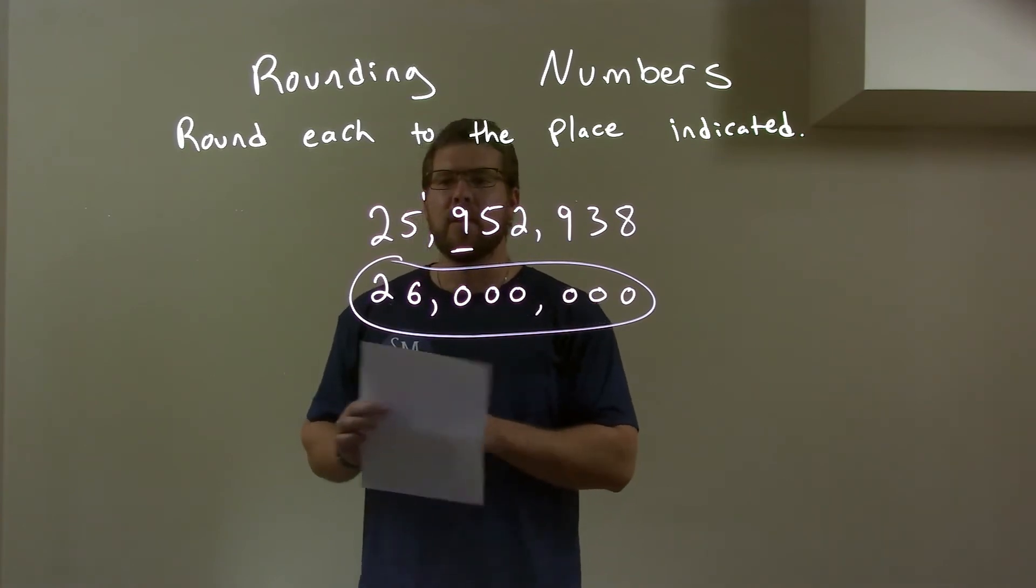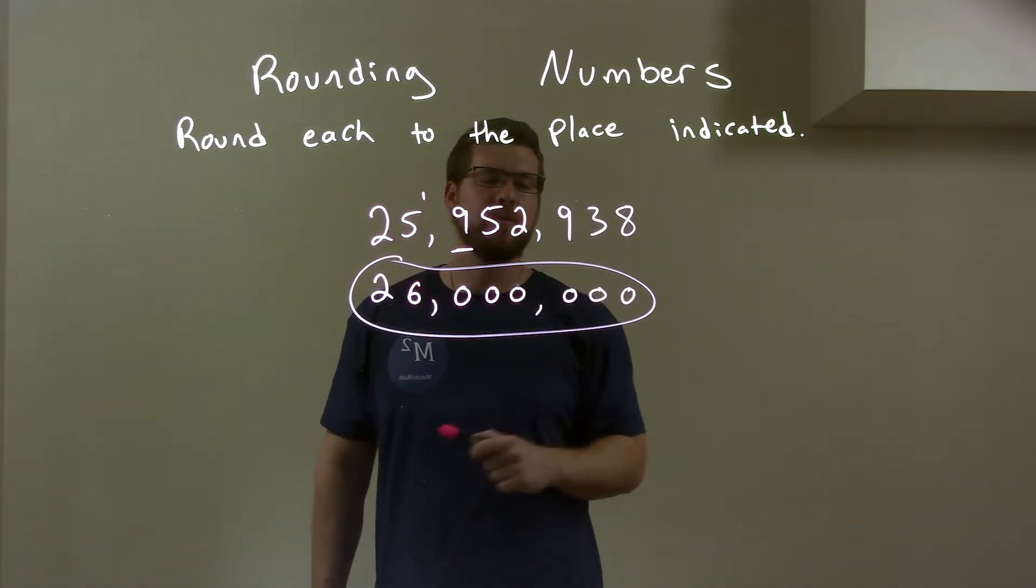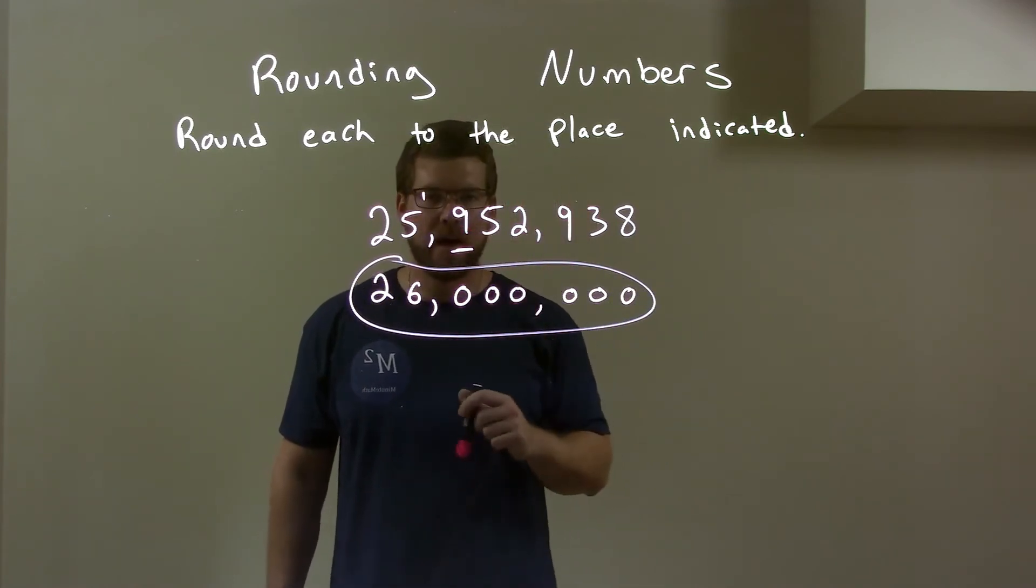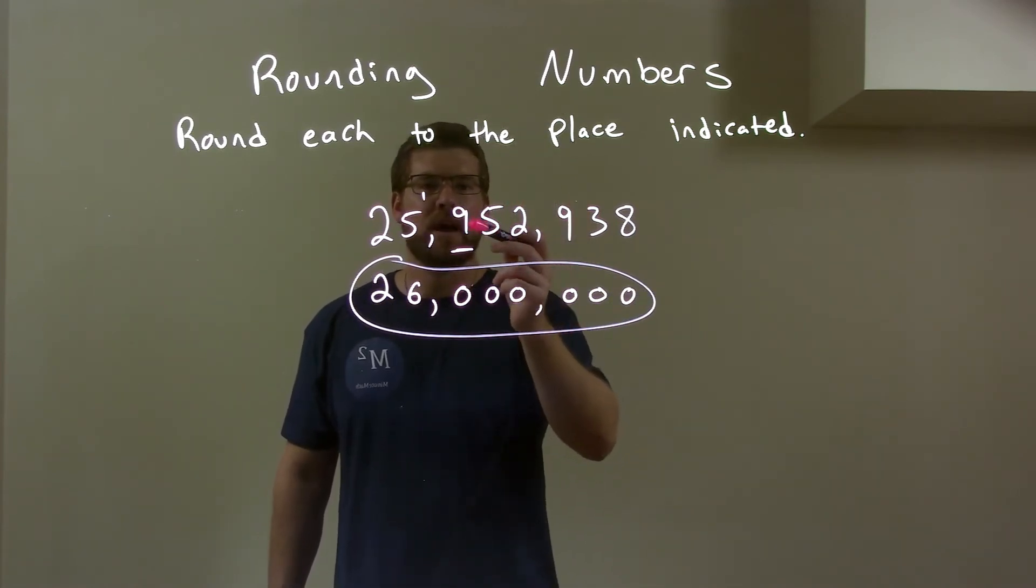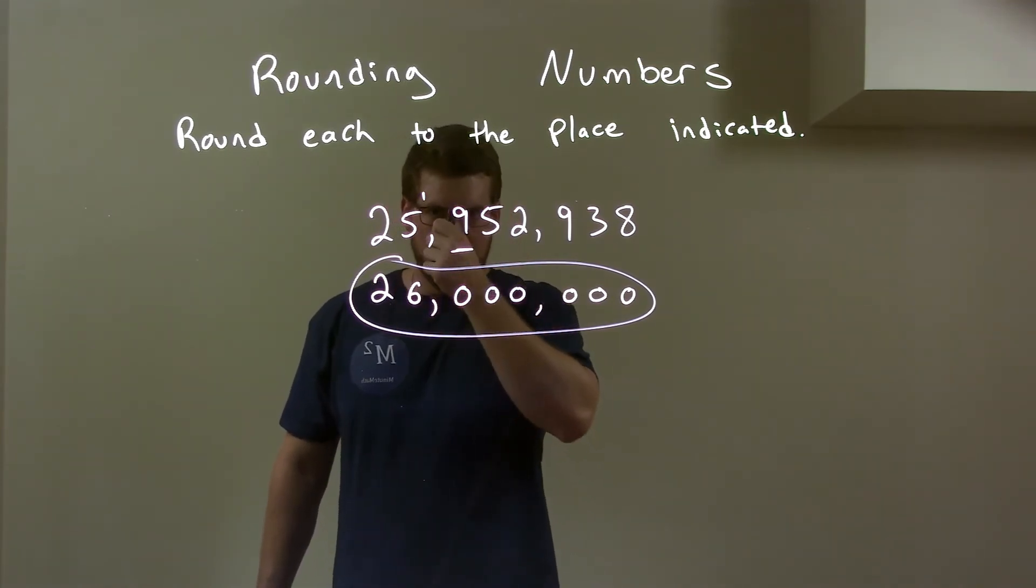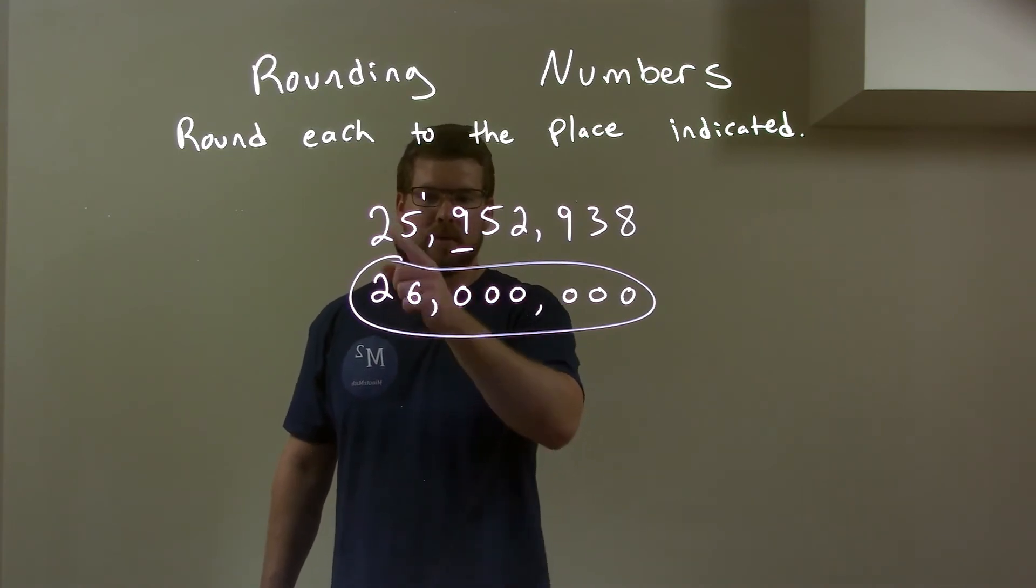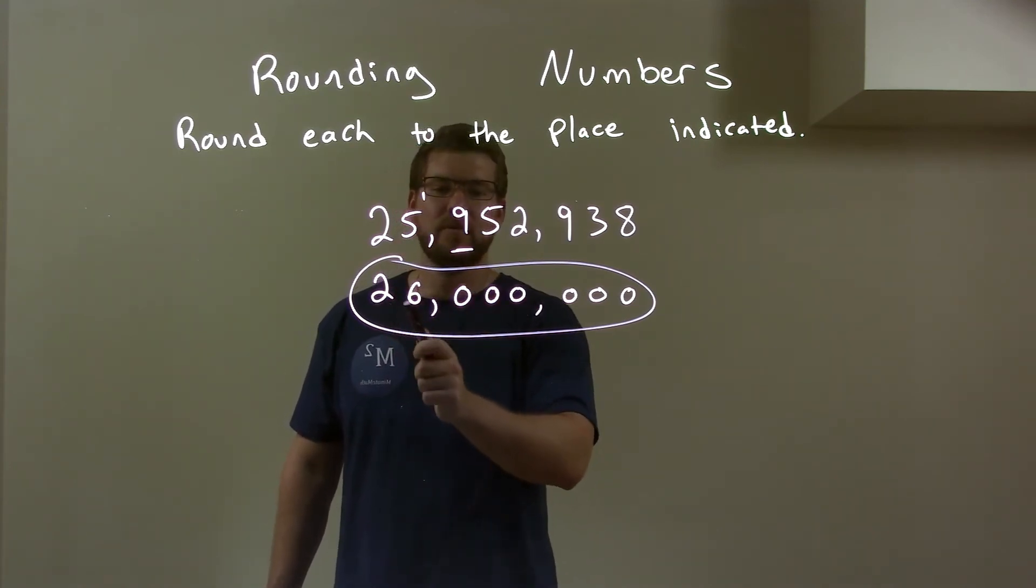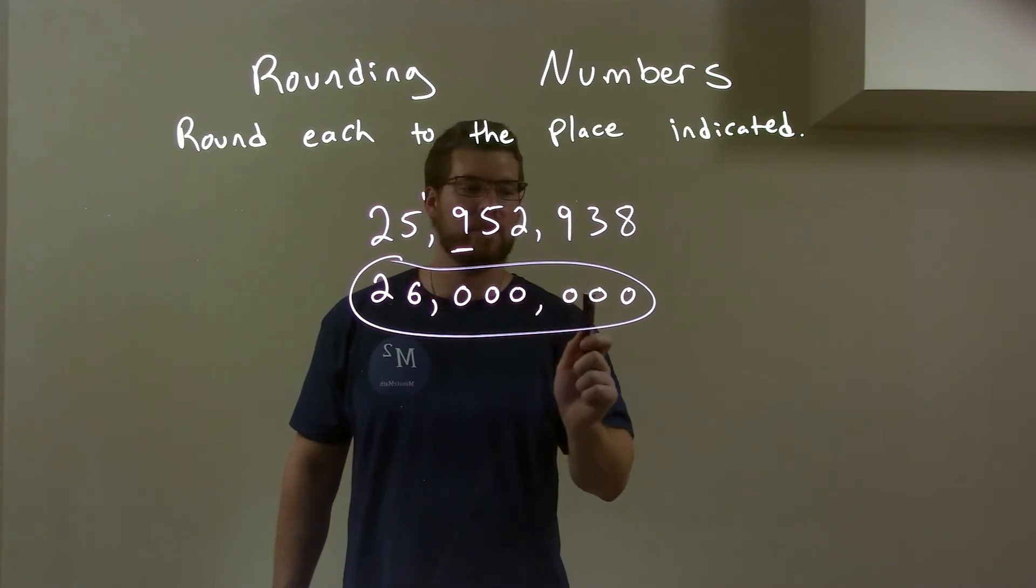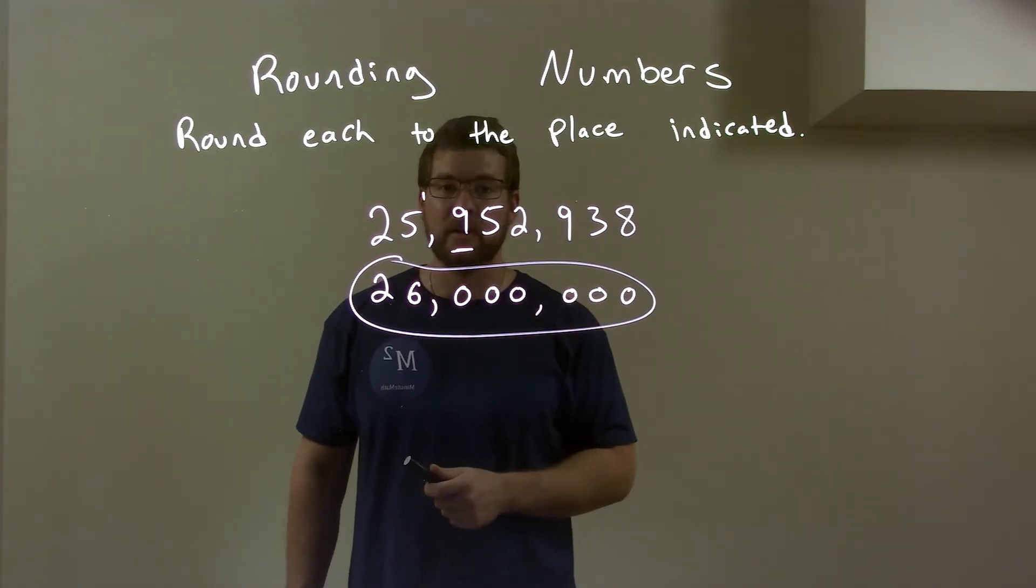So let's recap. We're given 25,952,938, and we're rounding on this 9. Well, the 5 causes the 9 to round up. So this is a 0, put a 1 up there. Then the 1 comes down as the 5 becomes a 6, bring the 2 down. So now we have 26,000,000. And that is our rounded answer.